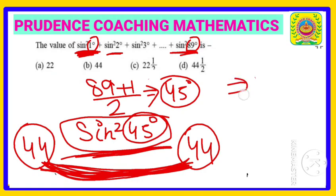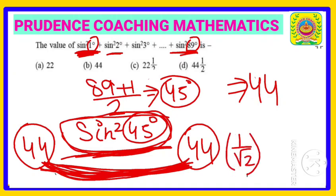But you have not calculated sine square 45. We know sine 45 is 1 by root 2. But here we have sine square 45, so if you find the square of 1 by root 2, you will get half. So 44 plus half will be the answer of this particular series. Your answer will be 44 and a half, this is your final answer.